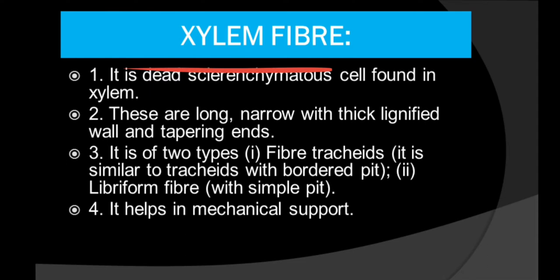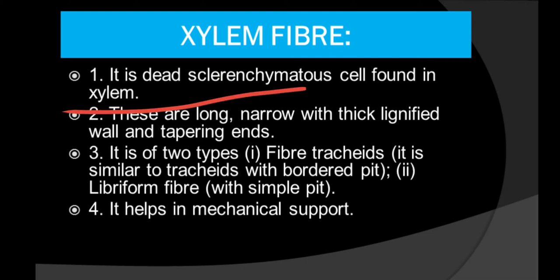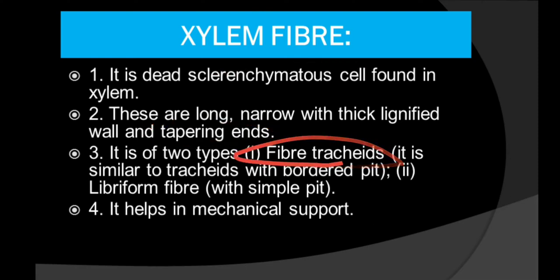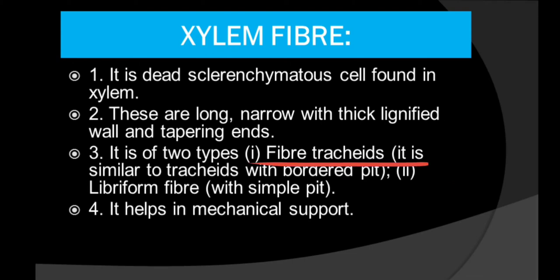Xylem fibers are dead sclerenchyma cells found in the xylem, and their main function is to give mechanical support. They are long, narrow, with thick lignified walls and tapering ends. Xylem fibers are divided into two types: fiber tracheids, which are similar to tracheids with bordered pits, and libriform fibers, which have simple pits with no border around them.